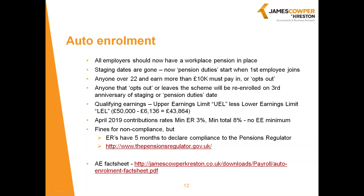Staff whose auto-enrolment has been postponed can choose to opt in during the postponement period. The criteria for enrolling an employee is that they earn over £10,000 per year, are aged 22 or over and under their state pension date, and are ordinarily working in the UK. If employees meet the criteria they must be automatically enrolled, and will then have to opt out within a month if they don't want to be a member. Employers must not be seen to be encouraging staff to opt out — the opt-out notice must be provided by the pension scheme, not the employer.